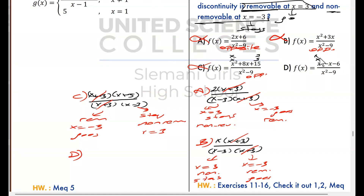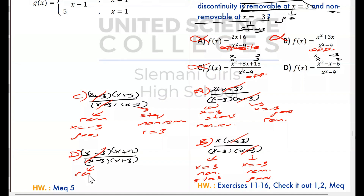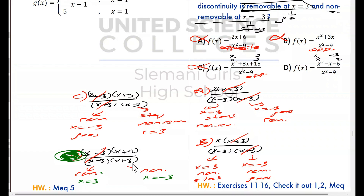Option D: factorize the numerator x squared minus x minus 6. The factors are (x minus 3)(x plus 2), divided by (x minus 3)(x plus 3). x minus 3s cancel each other — x equals 3 is removable. x plus 3 stays — x equals negative 3 is non-removable. That is our answer. When you factorize and cancel common factors, the factor that goes is the removable discontinuity; the factor that stays in the denominator is the non-removable discontinuity. Option D is true.